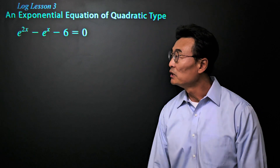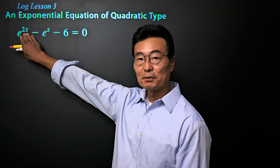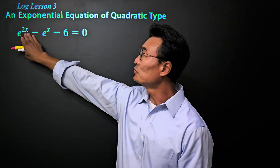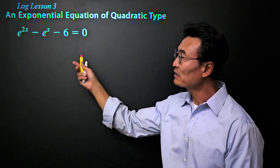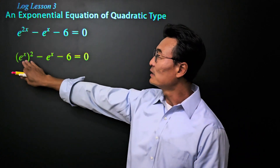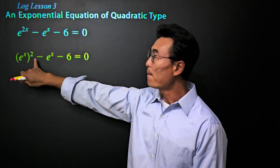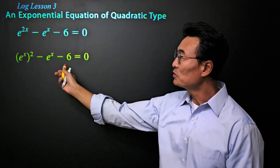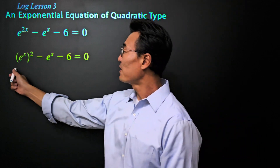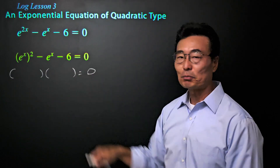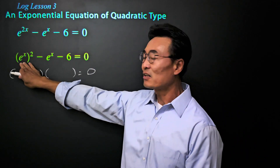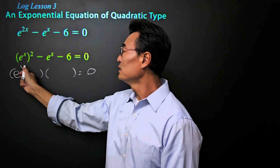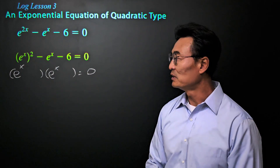Here's another familiar-looking equation where we have the variable in the exponent position. The only difference is we have e as the base, and we also have e to the two x and e to the x. So first thing we want to do is rewrite this equation so that we have e to the two x, parentheses squared, minus e to the x. That way we have it in the quadratic equation format. Then we need to go ahead and factor this, starting by drawing two sets of parentheses. What two things multiplied will give us e to the two x? It's e to the x and e to the x.